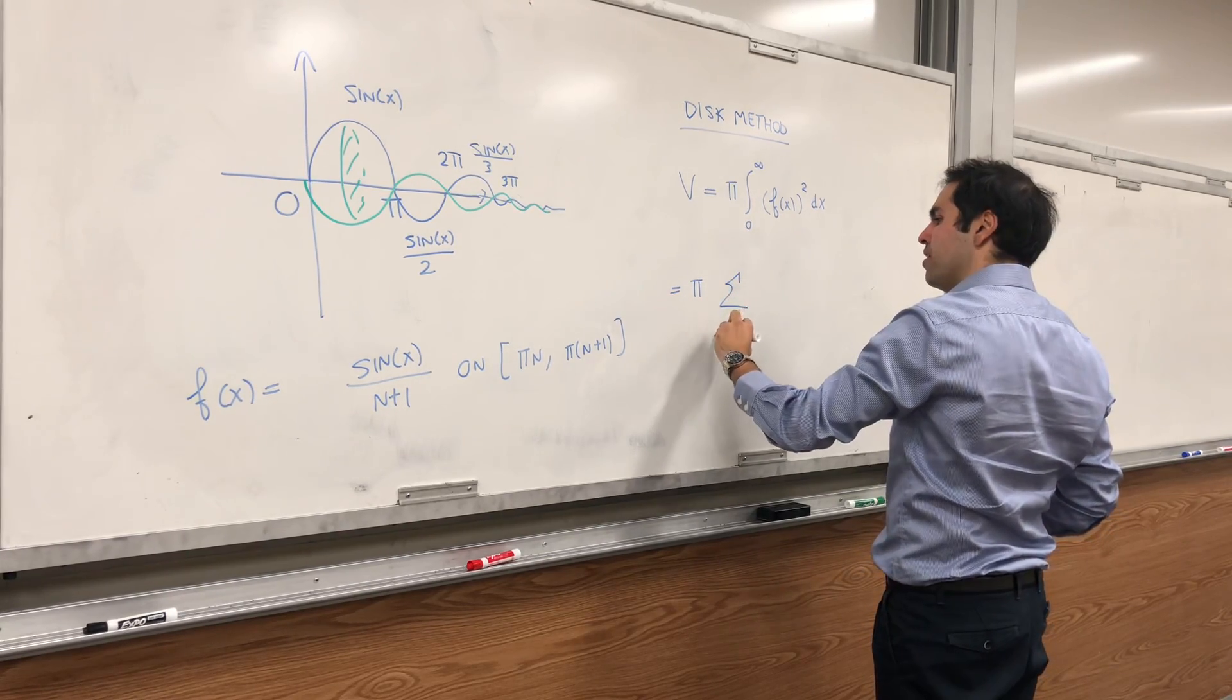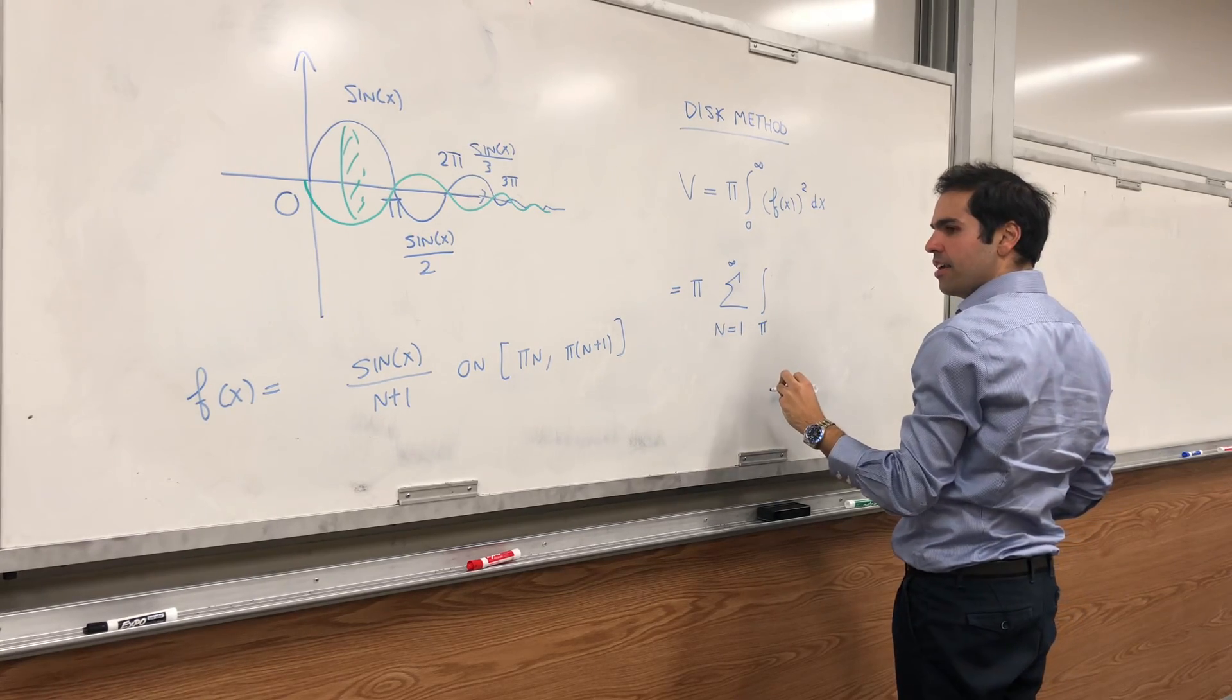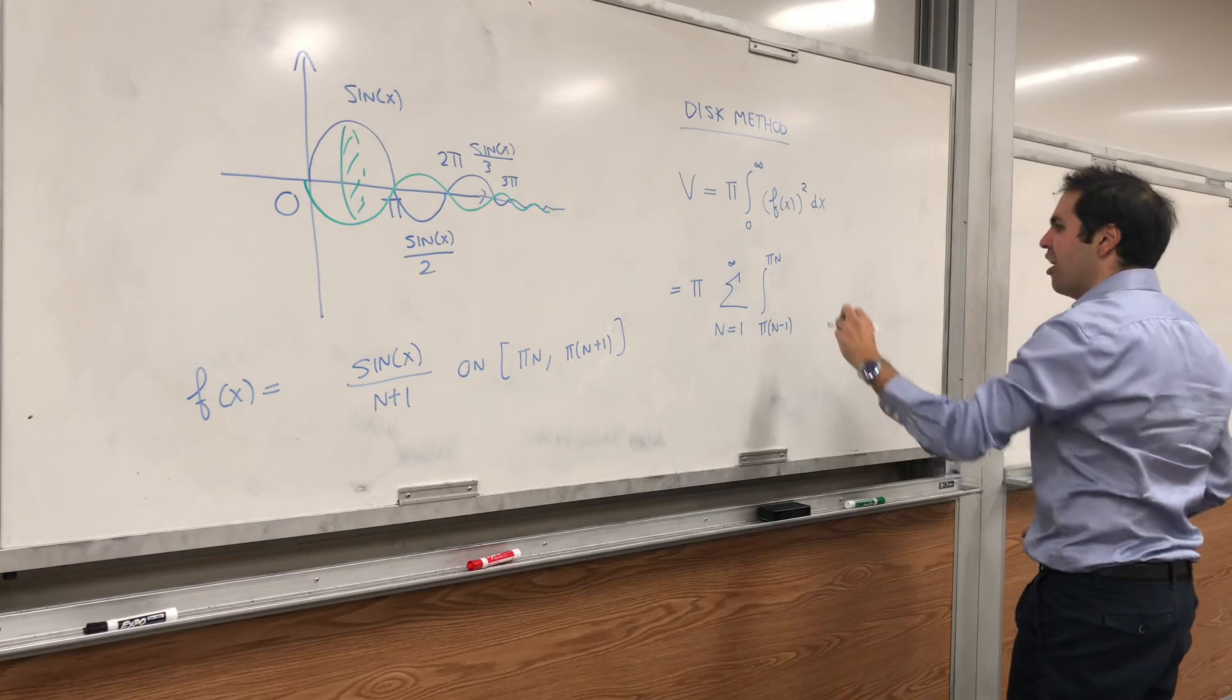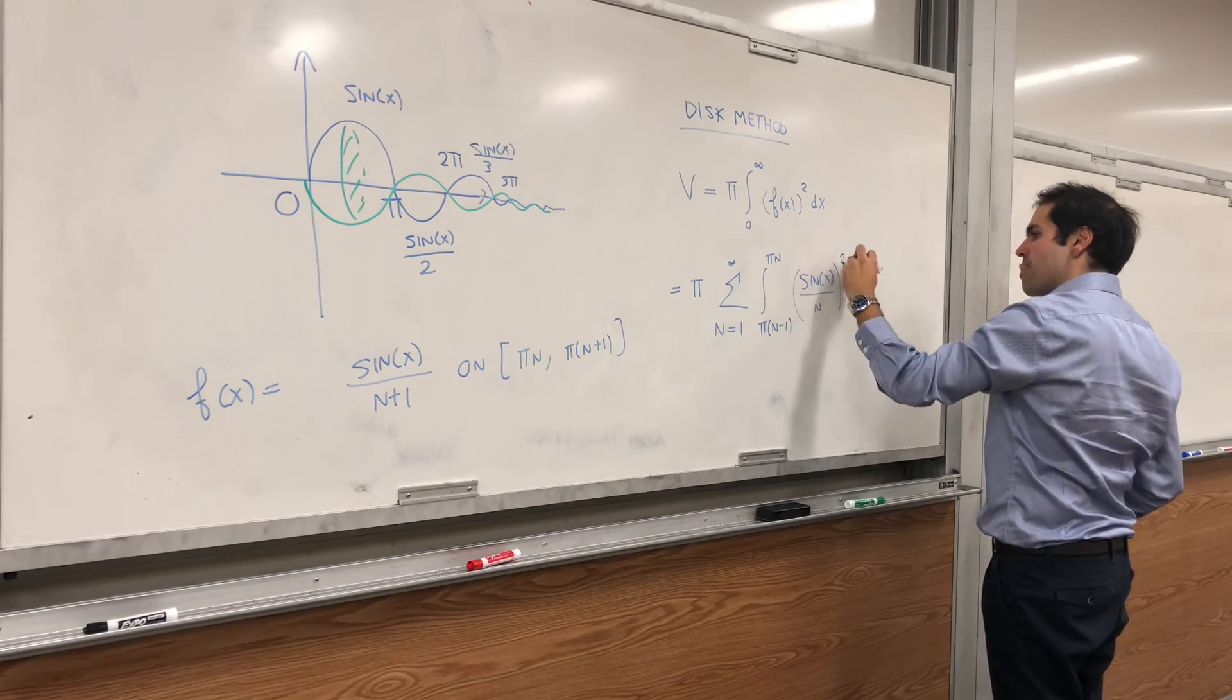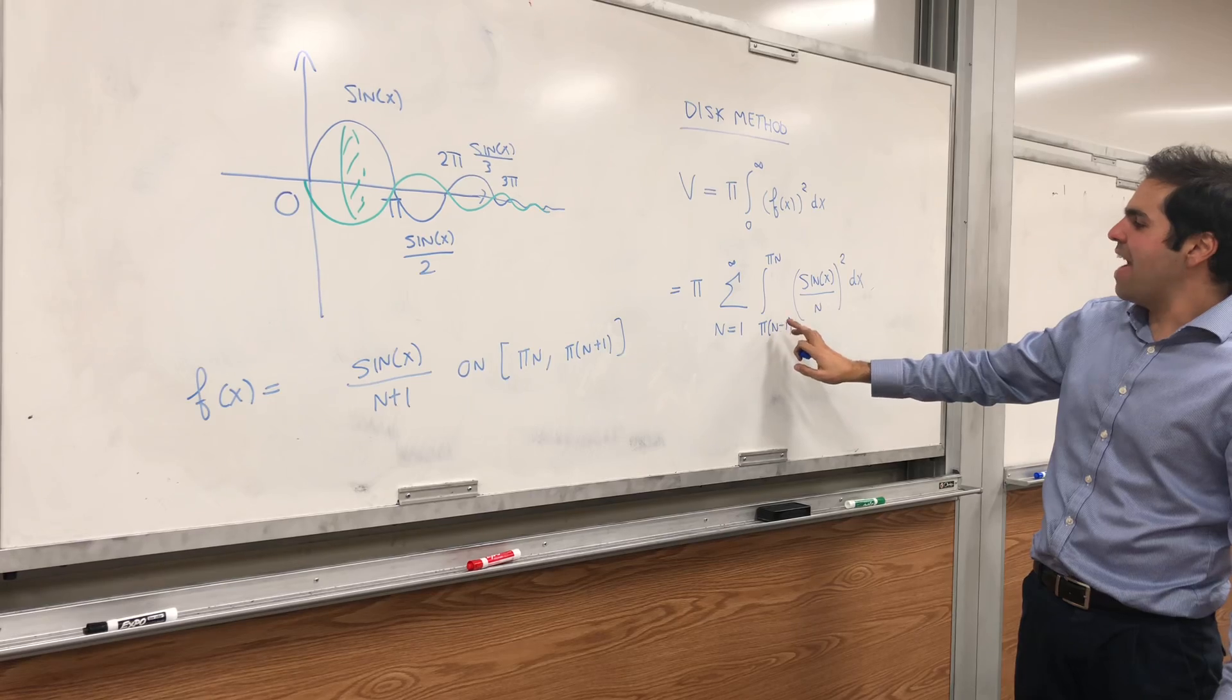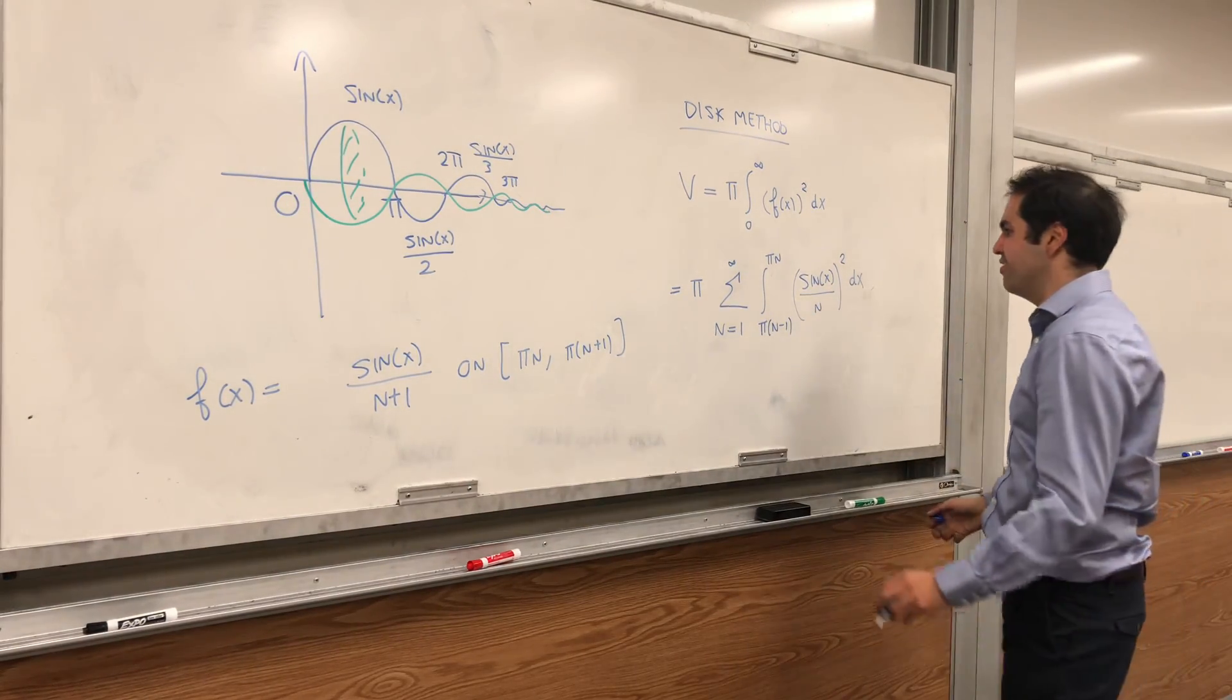So really, the volume is just a sum. Sum from 1 to infinity of the integral from each interval, so pi n. So it should be pi n minus 1 to pi n of sine of x over n squared dx. So I just shifted indices here.